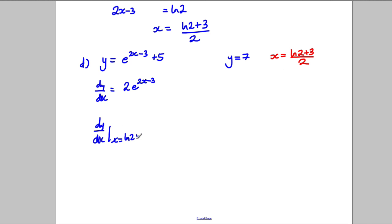So we want to work out dy by dx when y is 7, and that's when x is this. So when x is equal to the natural logarithm of 2, add 3, all divided by 2. So we're going to substitute that in here.